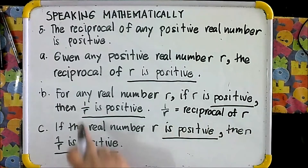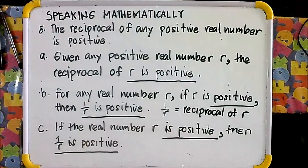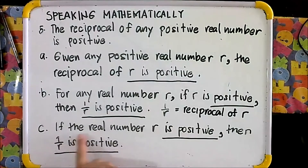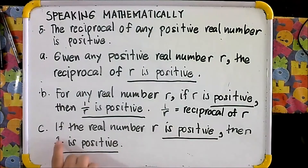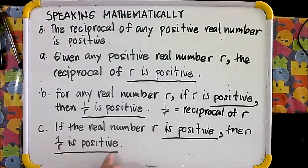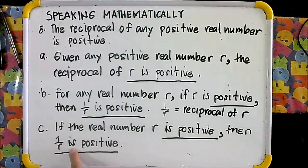Your answer is: 1 over R is positive. For letter C: if the real number R is positive, then 1 over R is positive, or equivalently, the reciprocal of R is positive.